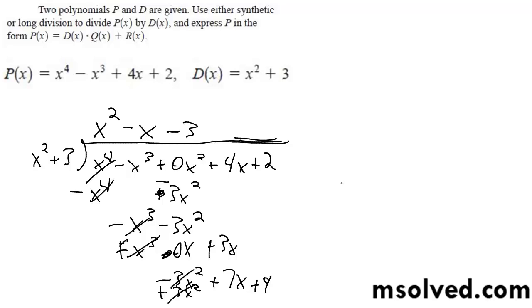So we're left with essentially x squared minus x minus three, plus seven x plus nine over x squared plus three. There you have it.